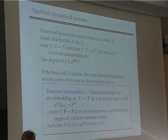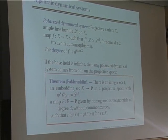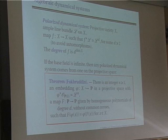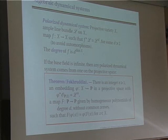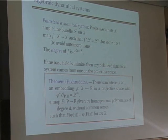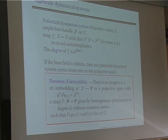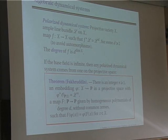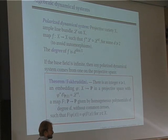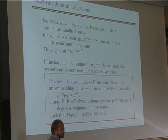The general setup will be that of a polarized dynamical system. I take a projective variety X, an ample line bundle L on X, and a map f from X to X such that the pullback of the line bundle L is isomorphic to some power L^d, for some integer d which I assume to be greater than 2 to avoid automorphisms. The degree of f as a finite map is d to the power of the dimension of X.